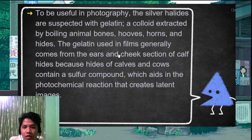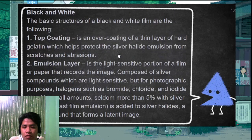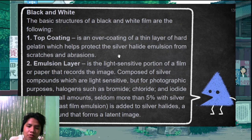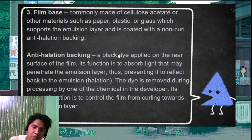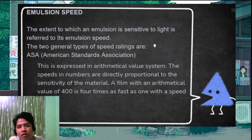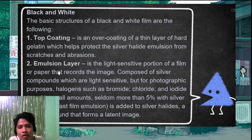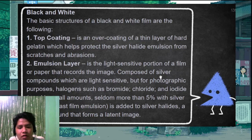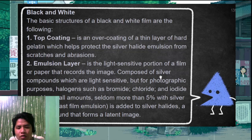For black and white film, there are three parts: the top coating, the emulsion layer, and the film base. The top coating is at the top to protect the emulsion layer — it is scratch resistant. The emulsion layer contains different chemicals — silver compounds including silver halides — to record the latent images.